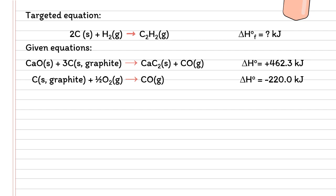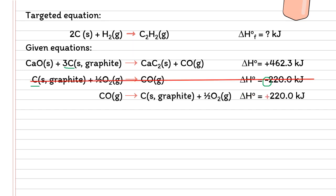Let's start with carbon. We have 2 thermochemical equations that have carbon in them. If we look here, we have carbon on the same side — adding them gives 4 carbon, but we want only 2 carbon. To get 2 carbon, we are going to reverse the second thermochemical equation. Once reversed, the sign changes, giving us a delta H of positive 220.0 kilojoules. With carbon now on different sides, we cancel them and are left with 2C.